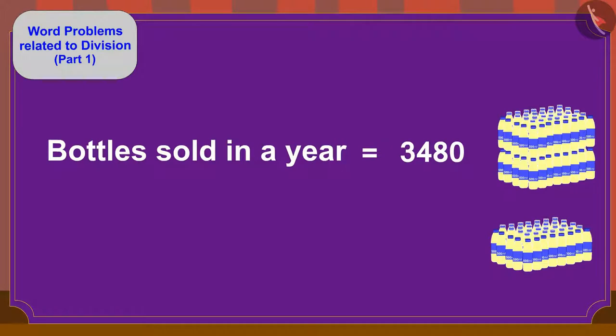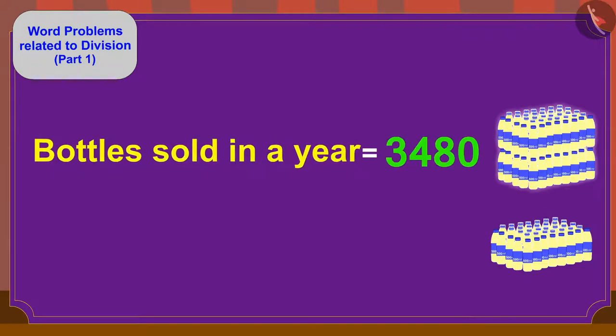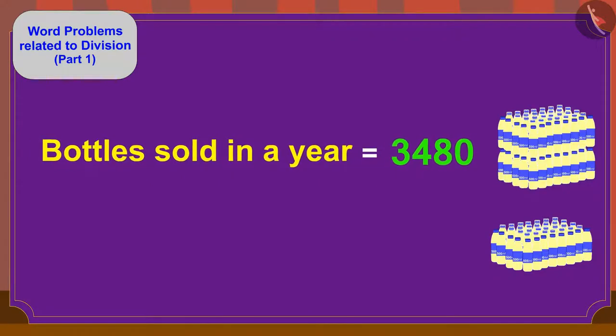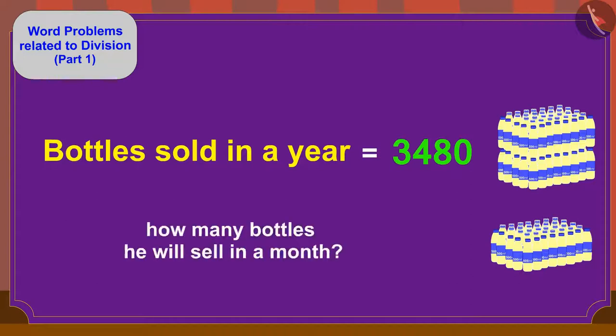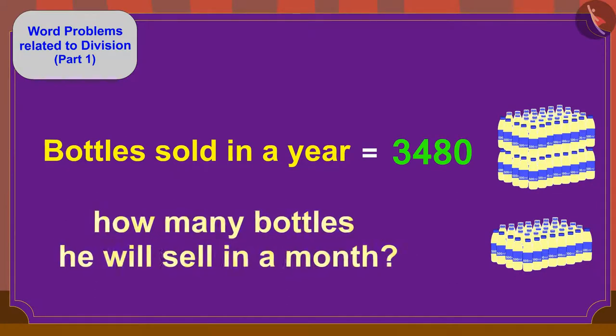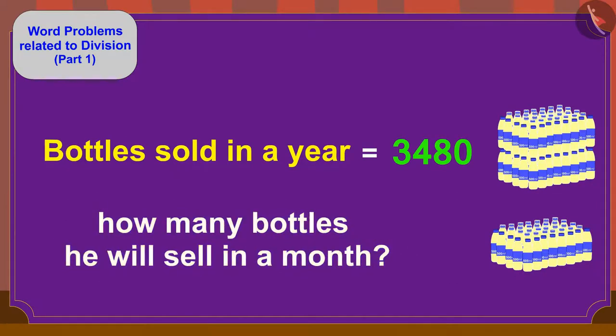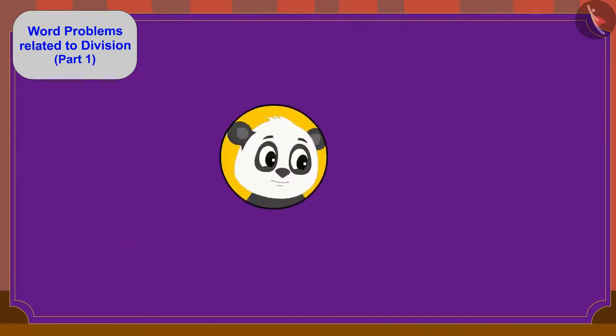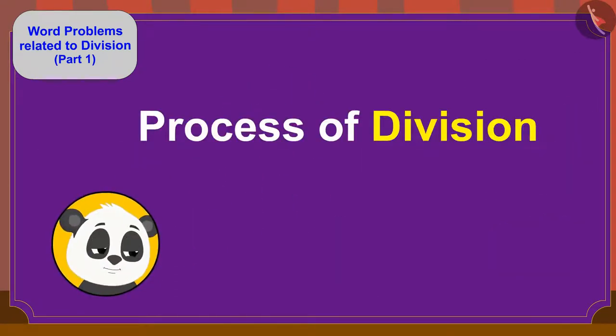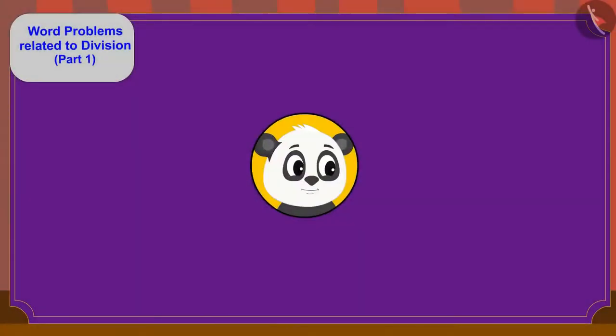Children, can you help Golu? If Golu sells 3480 masala milk bottles in a year, what process will we have to use to find out how many bottles he will sell in a month? That's correct, the process of division. Let us solve it together.